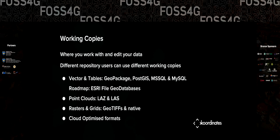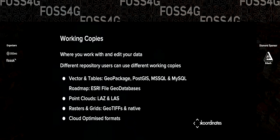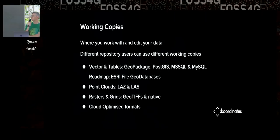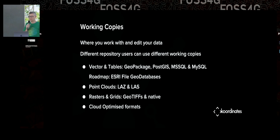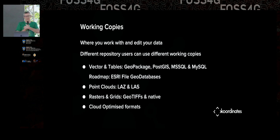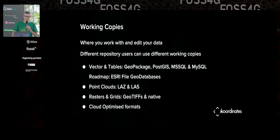We have this concept of working copies — that's where you work and edit your data. When we were in QGIS, we saw a geopackage file and a directory. We have different working copy formats for different places: you can put data from your Kart repository straight into PostGIS, and Kart will keep updating it as you switch between branches and revisions. You can do the same with Microsoft SQL Server, MySQL, and ESRI. We've started using cloud-optimized formats for point clouds and rasters, and the idea is to start serving tiles and STAC and other things from repositories, supporting any revision back through the history of all changes.